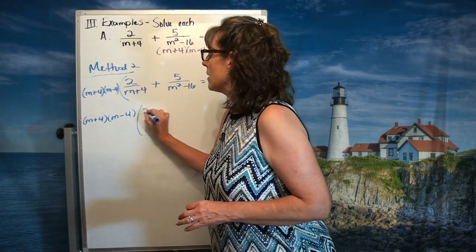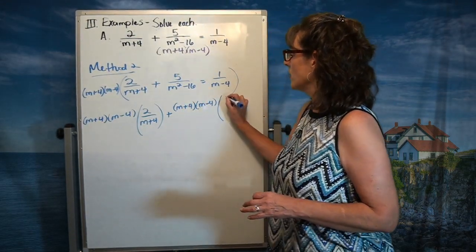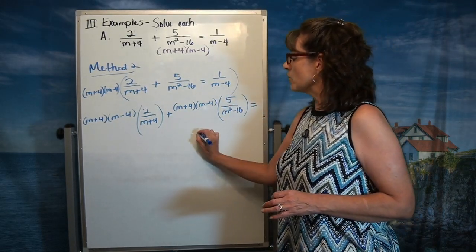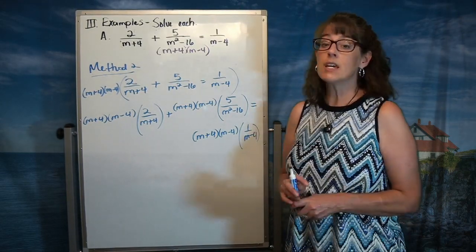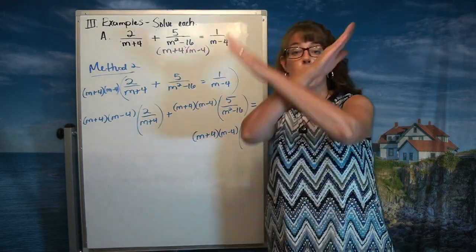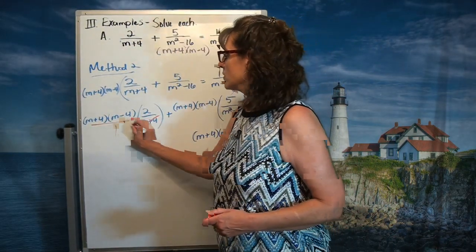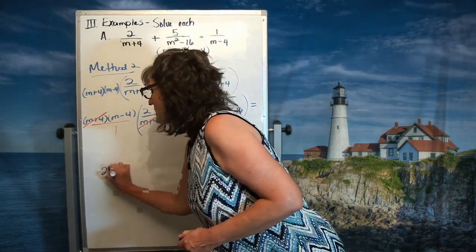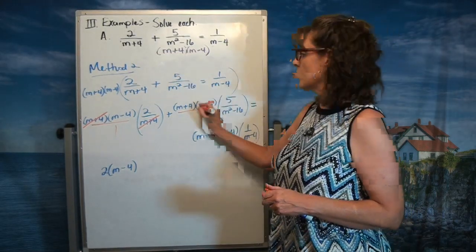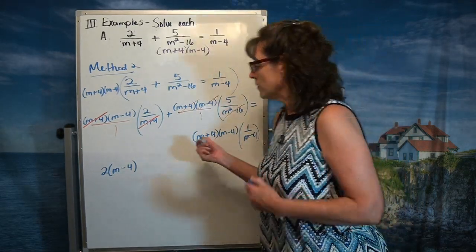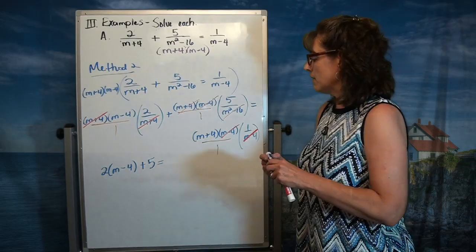This is a pretty sweet method. Multiply the first term by the LCD, multiply the second term by the LCD, and multiply even the back by the LCD. The reason we do this is — there's that gang symbol — when you multiply fractions, you cancel on the diagonals. As I look here, the m plus 4s are going to cancel out, leaving me with 2 times (m minus 4). On this one, it factored as m plus 4 times m minus 4, so the m plus 4s cancel and the m minus 4s cancel, leaving me with plus 5. And on this one, the m minus 4s cancel, leaving me with just m plus 4.